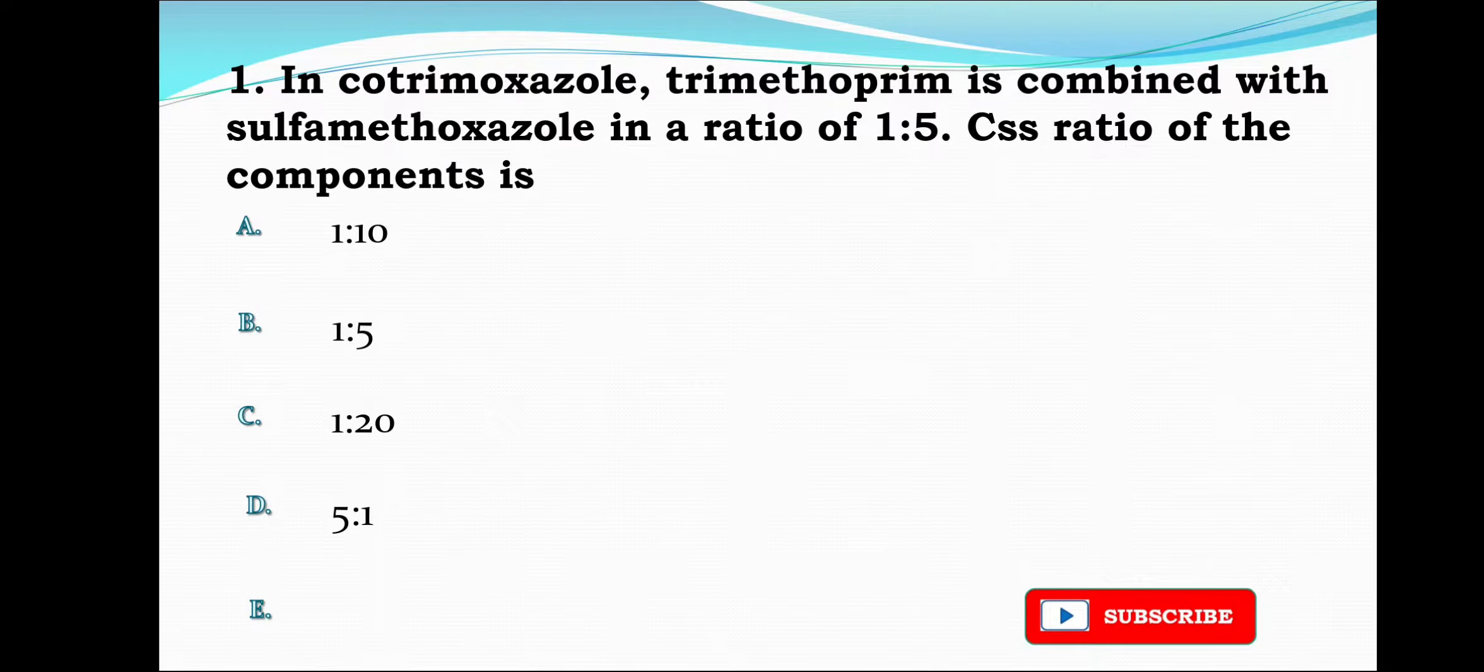The first question is: In cotrimoxazole, trimethoprim is combined with sulfamethoxazole in a ratio of 1:5. The steady state plasma concentration ratio of the components is 1:10,